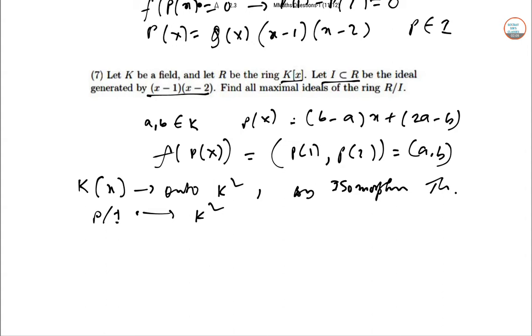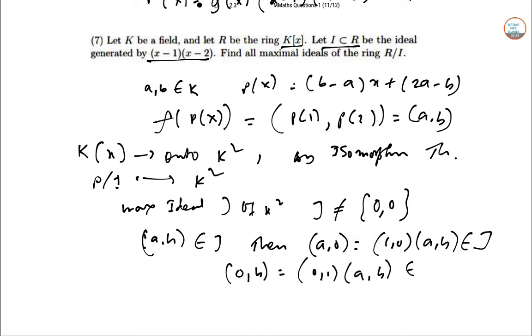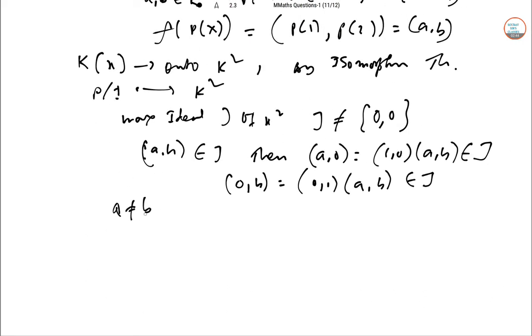Now consider a maximal ideal J of K² where J≠{(0,0)}. Consider an arbitrary non-zero (a,b)∈J. Then (a,0)=(1,0)(a,b)∈J and (0,b)=(0,1)(a,b)∈J.